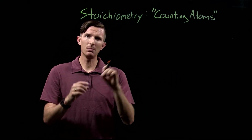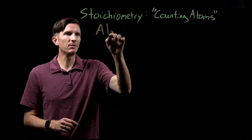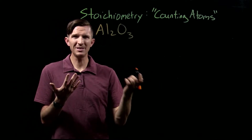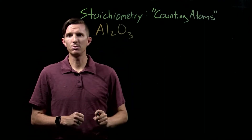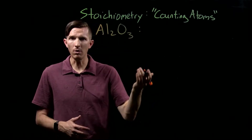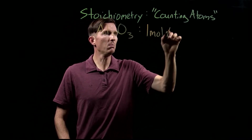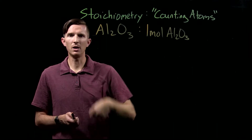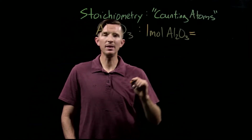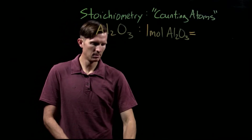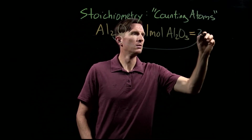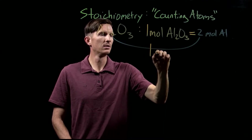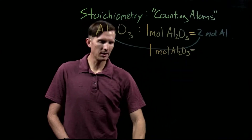One category is looking at a compound and comparing elements within it. For example, with the compound Al₂O₃, the counting-atoms proportion tells us that in one mole — or one formula unit — of Al₂O₃, we have two moles of aluminum.